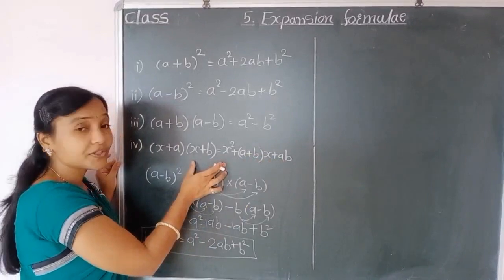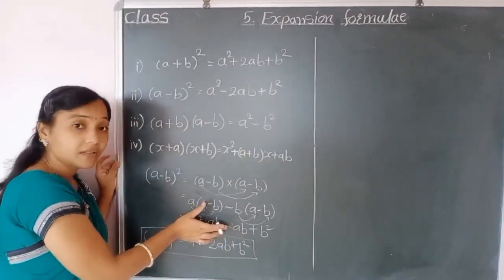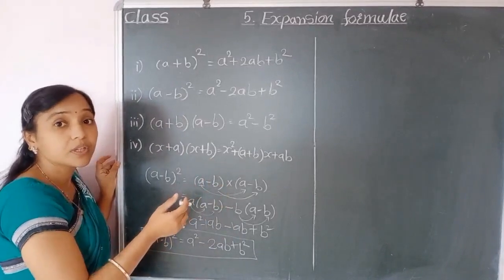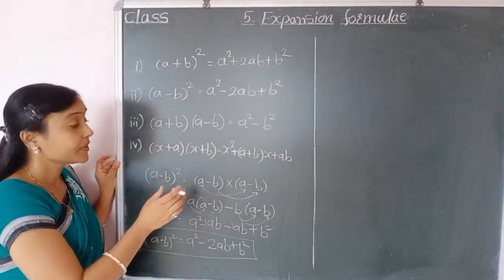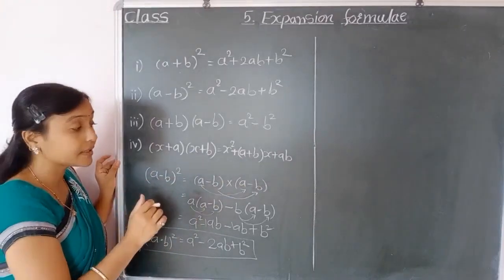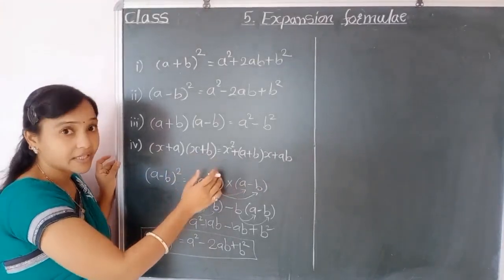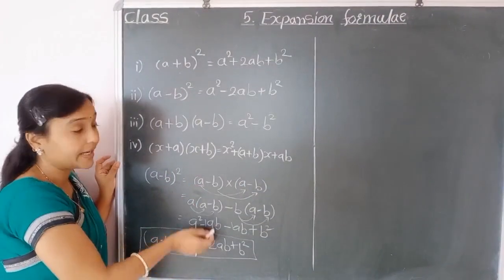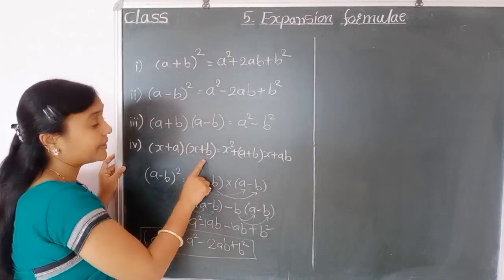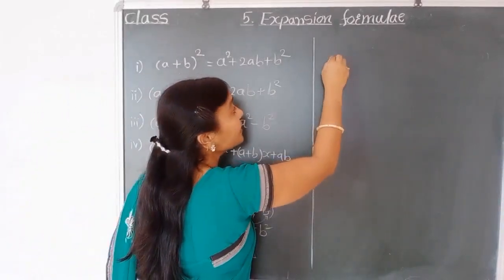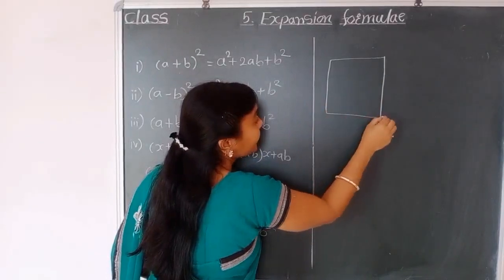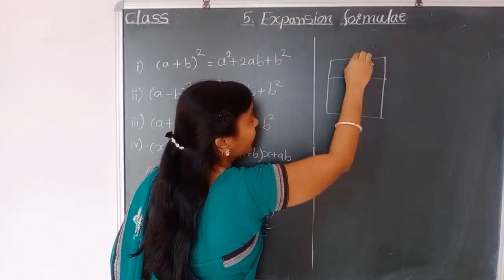We can get this expansion using the direct method, but in our book they also give an activity — finding this expansion by using a square and rectangle. So we see this activity. You try this method at home for the formula x plus a into x plus b. Suppose I take one square and make four parts.